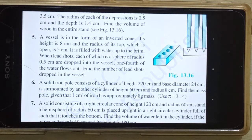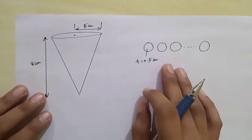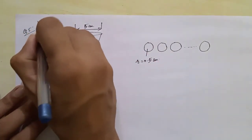The 13.2 exercises are being covered. Question number 5: a vessel is in the form of an inverted cone. Its height is 8 cm and the radius of its top, which is open, is 5 cm. It is filled with water up to the brim. When lead shots, each of which is a sphere of radius 0.5 cm, are dropped into the vessel, one-fourth of the water flows out. Find the number of lead shots dropped in the vessel.